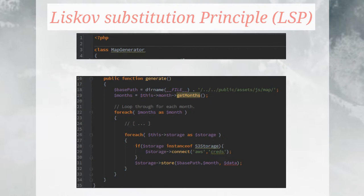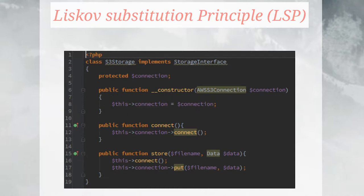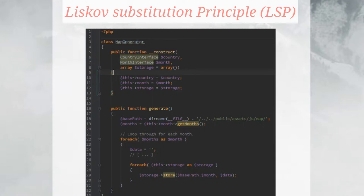The problem is that in our code, in that for loop, we're going to have to do extra work. If storage is an instance of S3 storage, we're going to have to call connect. This is not maintainable, because if we come along with another storage implementation — say pushing to an FTP server that also needs a different connect function — we're going to have a long list of if statements and it'll become spaghetti code. To fix that, we're going to move the connection back into store, so store is the only thing that needs to be called. We go back to the map generator and it no longer has that dependency — we're just calling store.